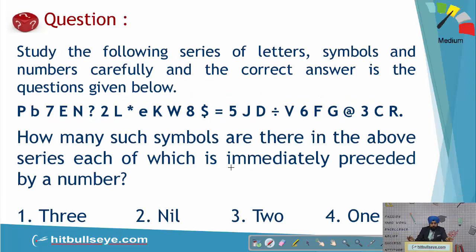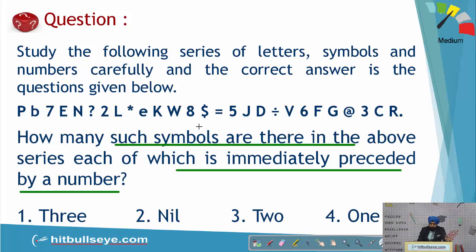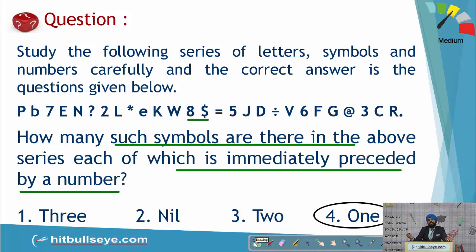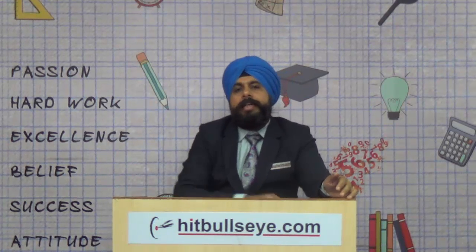This question asks: how many symbols are there which are immediately preceded by a number? We need to find numbers followed by a symbol. The number 7 is followed by a letter. The number 2 is followed by a letter. The number 8 is followed by a dollar sign, which is a symbol — so that counts. Then 5 is followed by J, 6 by F, 3 by C — all letters. So there is only one such symbol preceded by a number. The answer is the fourth option.